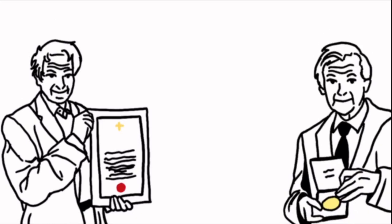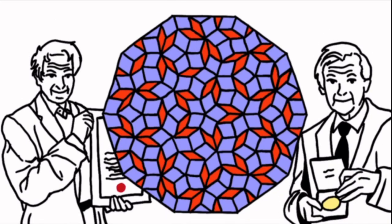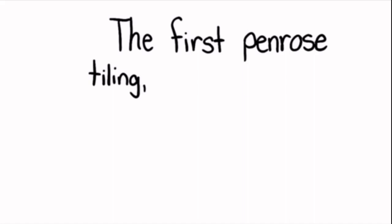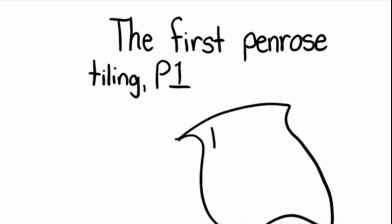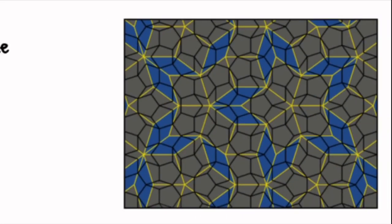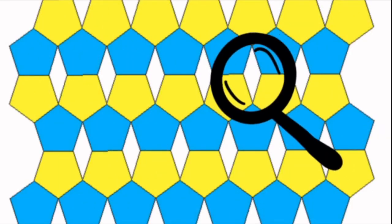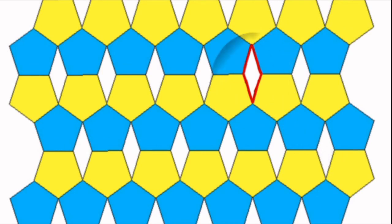However, out of all of his impressive feats, Penrose tiling stands tall. The first Penrose tiling, P1, was introduced in a 1974 paper. It was complex, having six unique tiles and rules. It was discovered by trying to fill the gaps caused by tiling of regular pentagons.